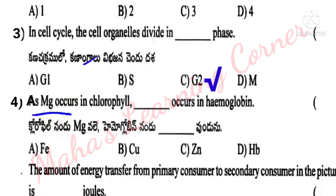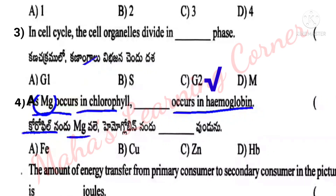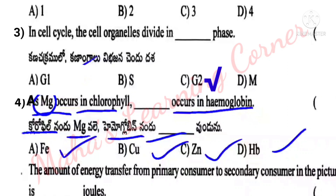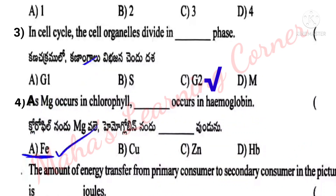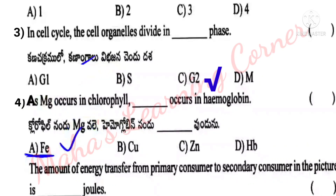Next question: Mg occurs in chlorophyll, and on the other hand Fe occurs in hemoglobin. So Mg is found in chlorophyll and Fe is found in hemoglobin.